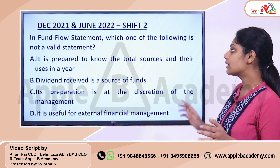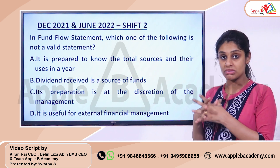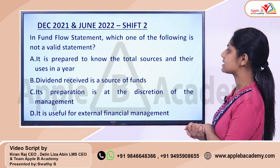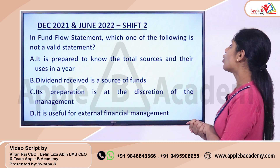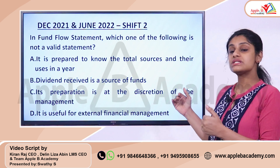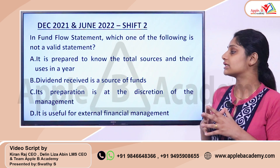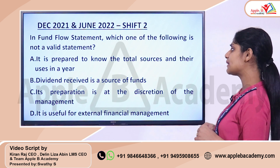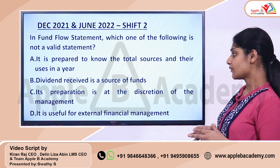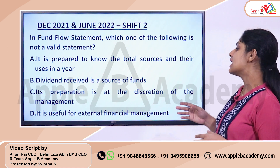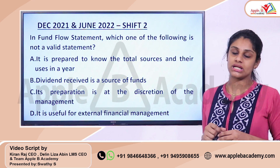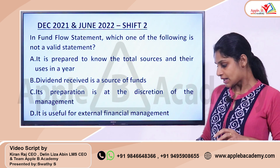In this topic, in December 2021, June 2022, MERS cycle Shift-2, we have discussed a question. Let's discuss the question: In fund flow statement, which one of the following is NOT a valid statement? Option A: It is prepared to know the total sources and their uses in a year. Option B: Dividend received is a source of funds. Option C: Its preparation is at the discretion of management. Option D: It is useful for external financial management.